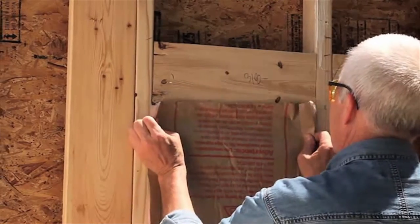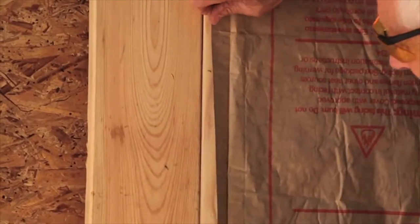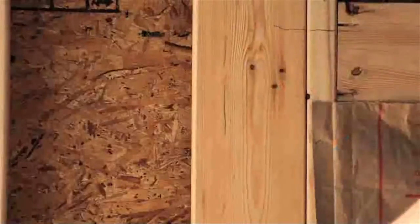First I make sure there's solid blocking all the way around the flange area. Then I install the insulation in the cavities behind the unit. Then I mark the location of the tub unit flanges.